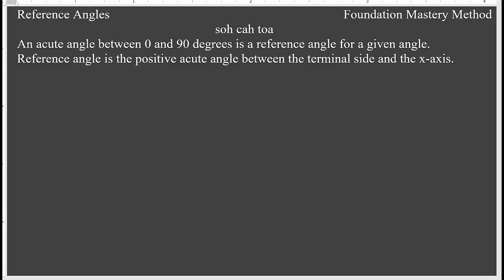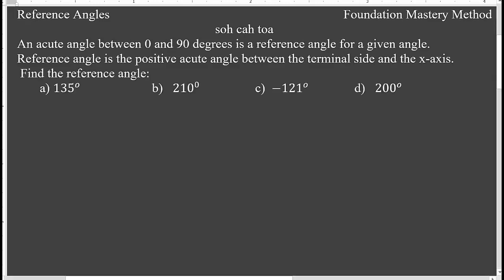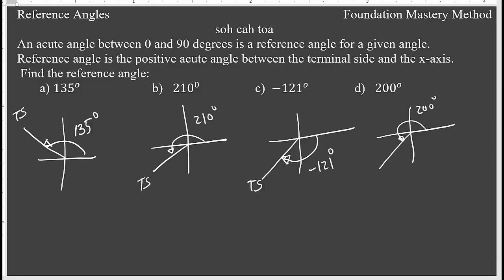We'll take a few examples to make things clear. We need to find the reference angle for 135 degrees, 210 degrees, negative 121 degrees, and 200 degrees. Let me plot the angles first. So I have plotted all the angles — 135 is below 180, so it is in the second quadrant.